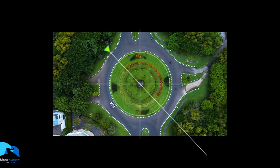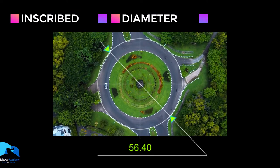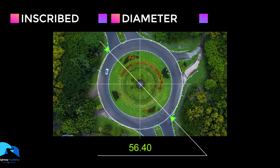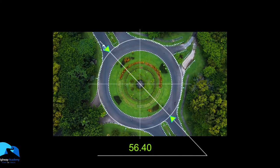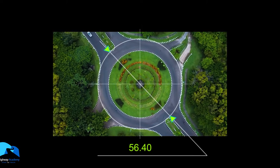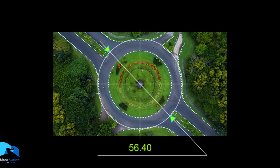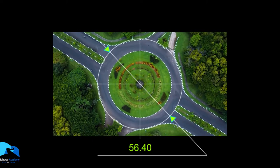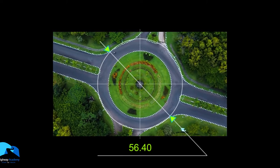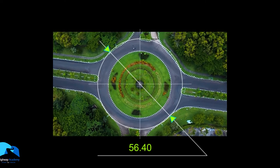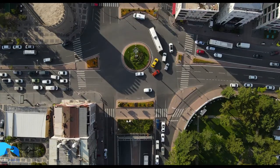The inscribed diameter is the distance of the inscribed circle, which is the outer curb of the circulatory lane. If you look at this roundabout, this is the inscribed circle for the outer curb, and the distance — which is the diameter of this inscribed circle — is the inscribed diameter.